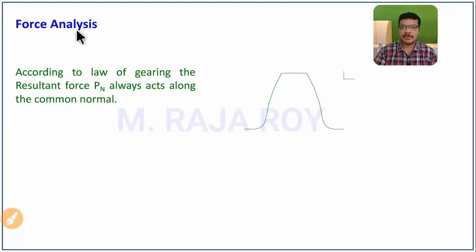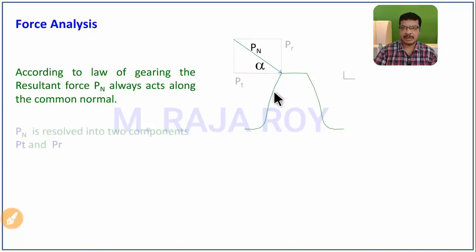In this video, I am going to explain force analysis of spur gears. According to the law of gearing, the resultant force Pn acts along the common normal. The angle made by the common normal is the pressure angle, so the resultant force Pn acts along the pressure angle alpha.